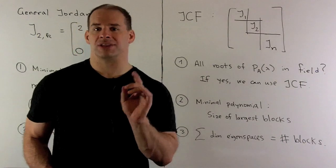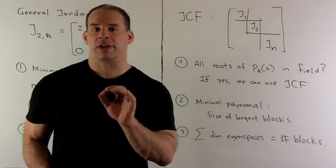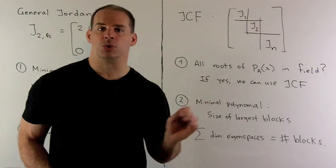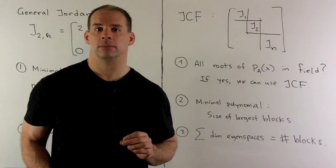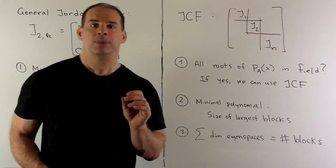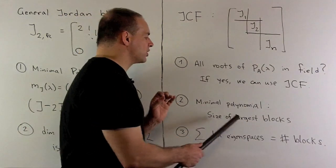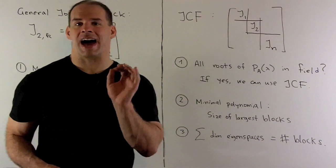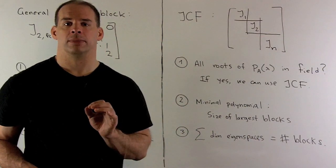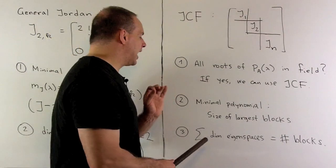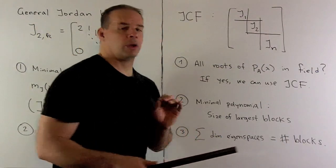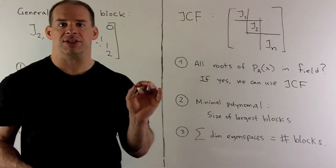If we're over the real numbers, that's something to worry about. If we're over the complex numbers, we can always use Jordan canonical form. Then we look at the minimal polynomial. That determines the size of the largest blocks for each eigenvalue. Finally, if we want to get a handle on the number of blocks that we use, take a look at the dimensions of the eigenspaces.